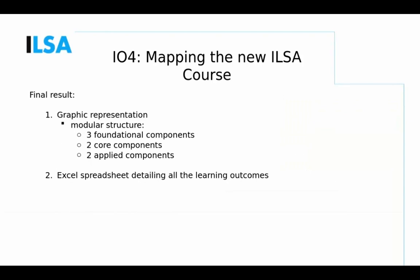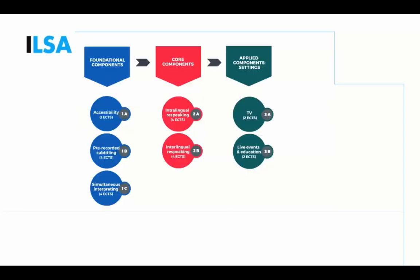The final result of the IO is, on the one hand, a graphic representation of the proposed course design visually representing its modular structure, and on the other hand, an Excel spreadsheet detailing all the learning outcomes of the course. What you see here in blue are the foundational components, in red the core components, and in green the applied components. The three foundational modules are aimed at acquiring the necessary knowledge and skills that students need before starting to learn re-speaking.